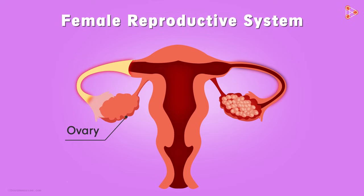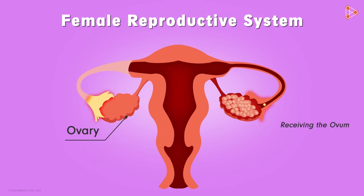Did you notice that the ovaries are connected to these tube-like structures? But they are not connected directly. If we look at it carefully, we find that there are finger-like projections which connect the two. These finger-like projections are very important for receiving the ovum when released from the ovaries. These finger-like projections are called the Fimbriae. The Fimbriae help to hold the ovum released and also help to sweep it to the tubes present ahead.